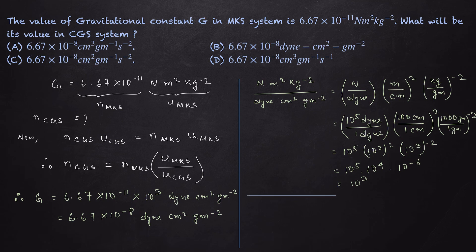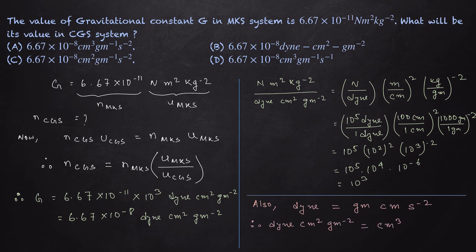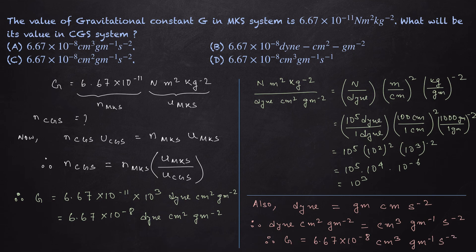We can also write dyne in more fundamental CGS units as gram × centimeter × second⁻², so substituting gives G = 6.67 × 10⁻⁸ centimeter³ × gram⁻¹ × second⁻². Looking at the options, both options A and B are correct. That's it for this video — see you in the next one.